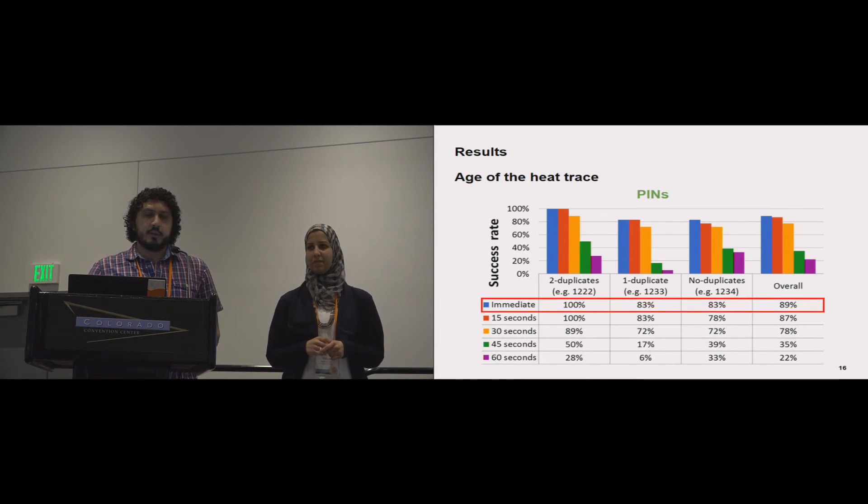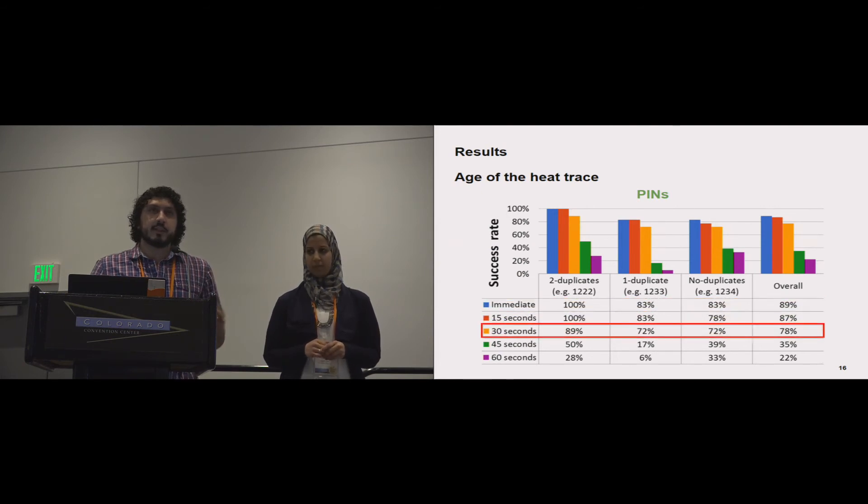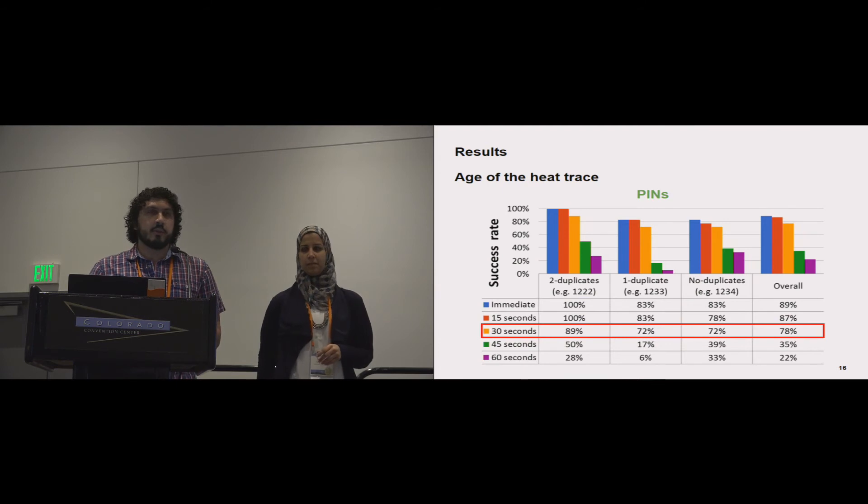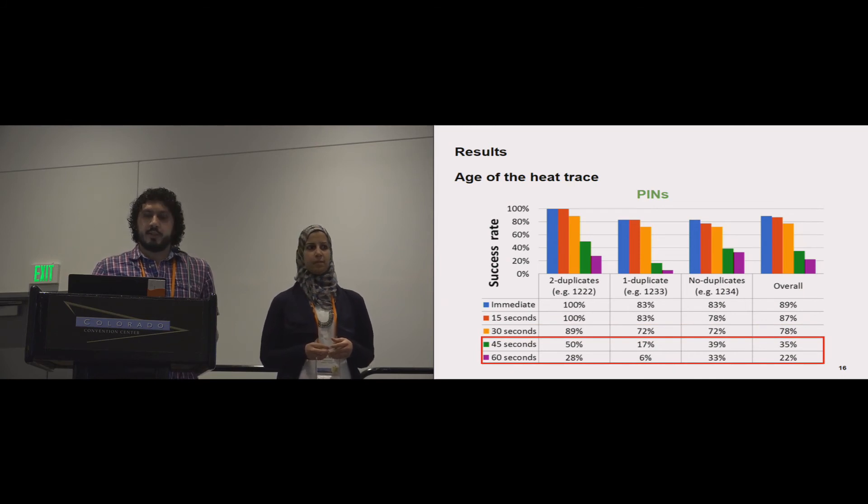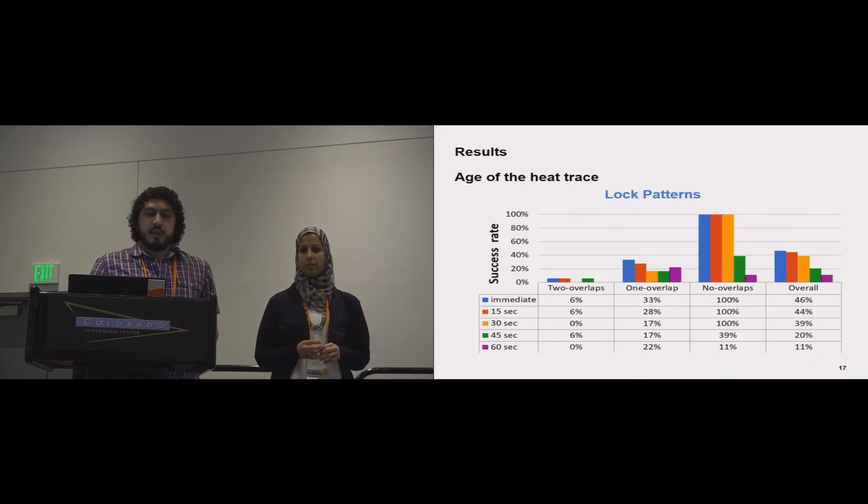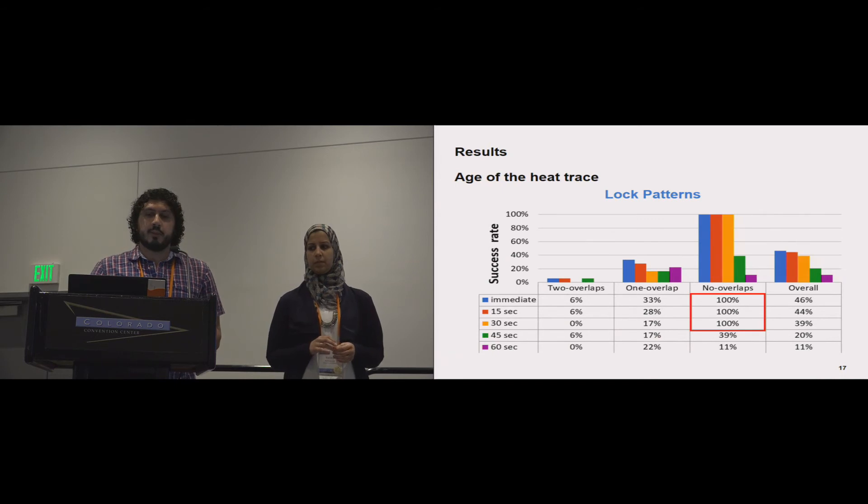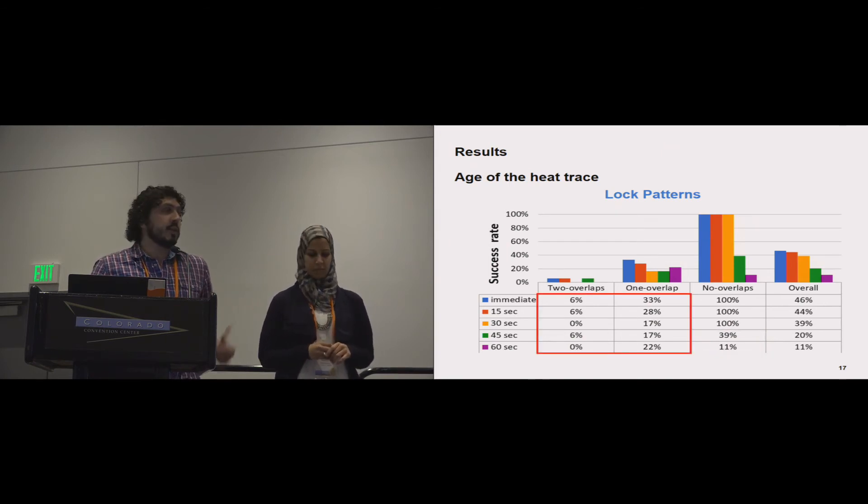As for the age of the heat trace, if you perform the attack immediately after authentication you get very high success rates, and it remains pretty high until 30 seconds after authentication. So 30 seconds after authentication is still between 70% and 90%. It gets lower as you leave the phone longer. In 45 and 60 seconds it's actually pretty low. Same goes for lock patterns that do not have any overlaps—recovery is 100%. All of the lock patterns that don't have overlaps were successfully recovered using thermal attacks. However, the accuracy or success rate decreases after 30 seconds. As I said earlier, having a single overlap really complicates thermal attacks.